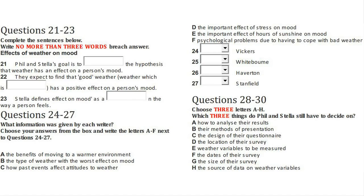And how would you define an effect on a person's mood? What would you be looking to find? An effect on the way a person feels — a change in the way they feel, like from feeling happy and optimistic to sad and depressed. Right. And what sort of weather variables will you be looking at? Sunshine, temperature, cloudiness, precipitation, among others. It'll depend a bit on what the weather's like when we do the survey.